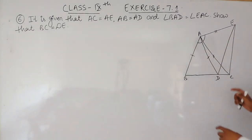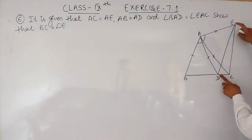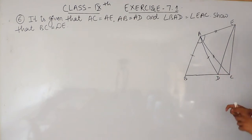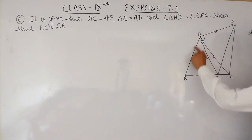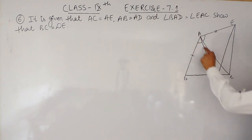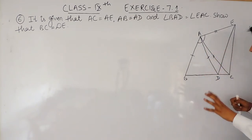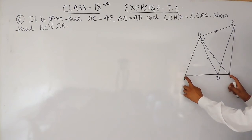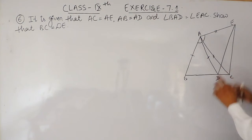So in this figure, you have to prove that side BC is equal to DE. To prove that, you need to prove that triangle ABC is congruent to triangle ADE. If you are able to prove that these two triangles are congruent, then obviously this side of one triangle and the corresponding side of the other triangle must also be equal.